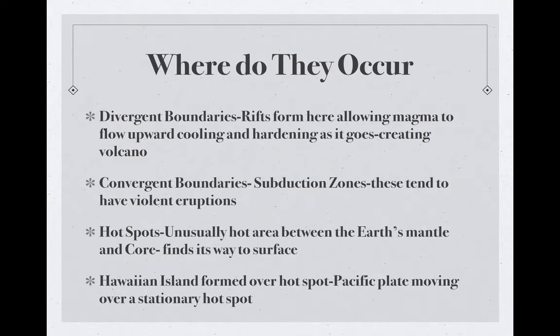That's how the Hawaiian islands were formed. Volcanoes can also form at convergent boundaries where plates come together, but they have to be at subduction zones. These tend to have violent eruptions because subduction zones always involve an ocean plate, and when you have water at these boundaries, the hydrogen there causes them to be much more volatile.